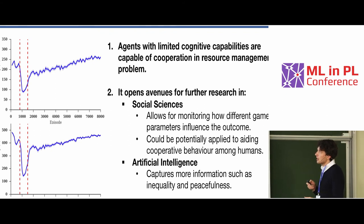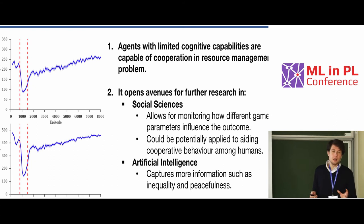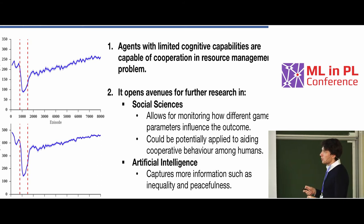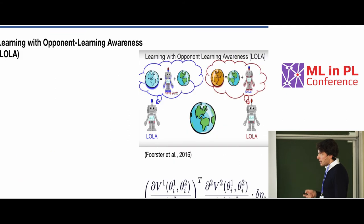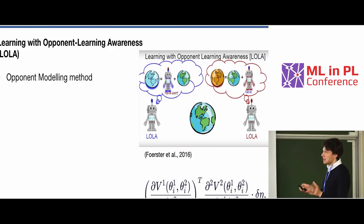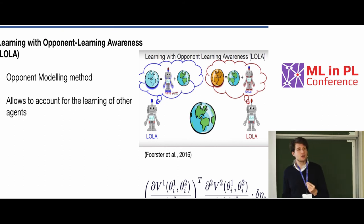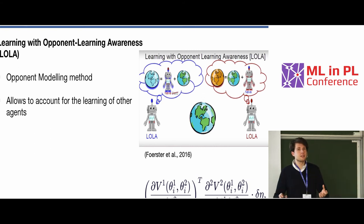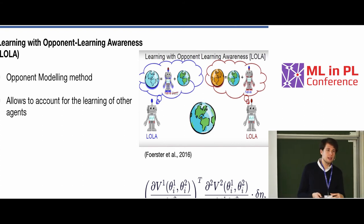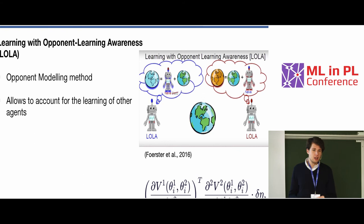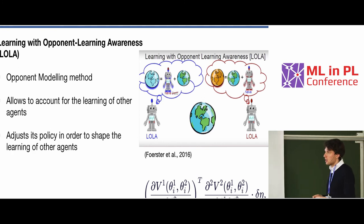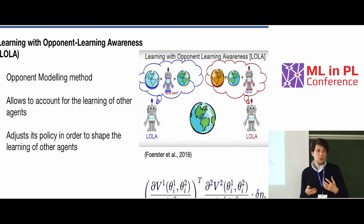This is very, very novel — meaning in the last two years, there were algorithms that specialize in this area. One of them is LOLA, which stands for Learning with Opponent Learning Awareness. This is an opponent modeling method. In short, what it does is allow accounting for the actions of other agents — meaning that in its value function, it incorporates the action which the other agent is trying to take. So as one agent, before taking an action, it tries to shape and influence the actions of other agents to do more of what it wants them to do.